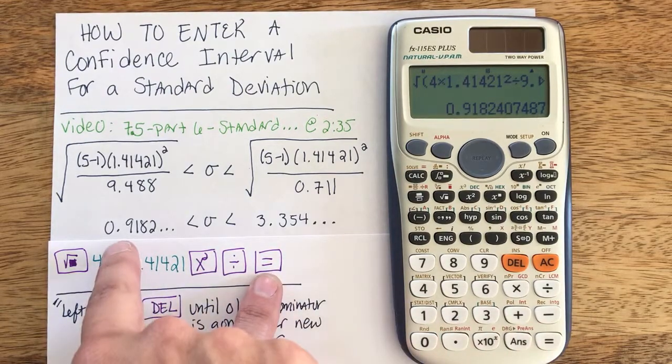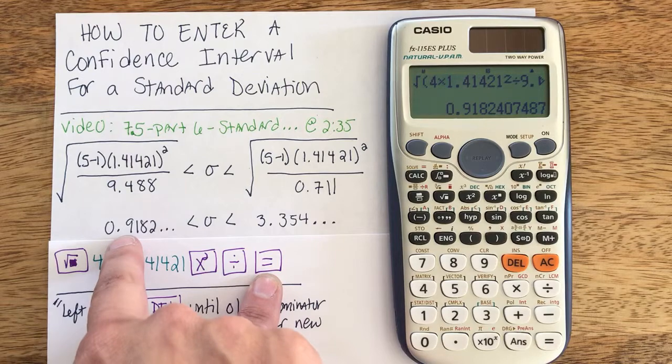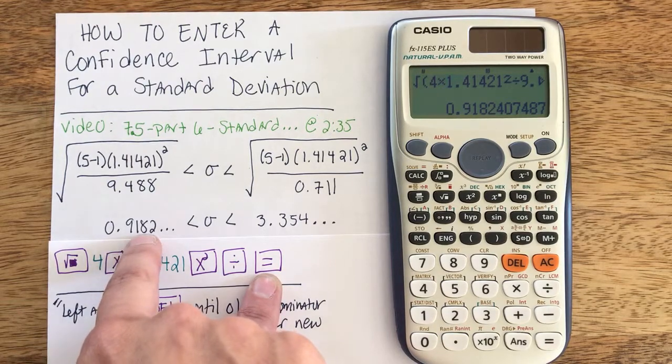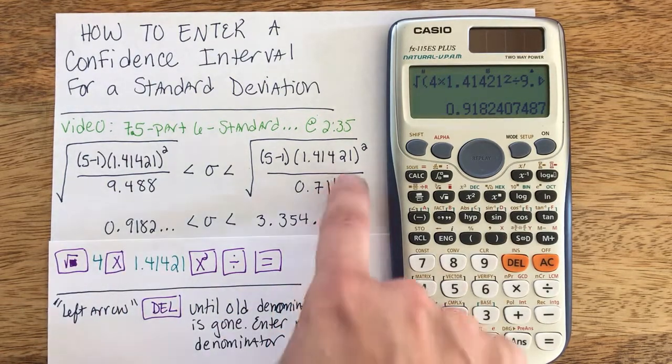After writing the denominator, sorry that's missing, I hit the equal sign and you can see I've got my lower bound of 9.18 etc.